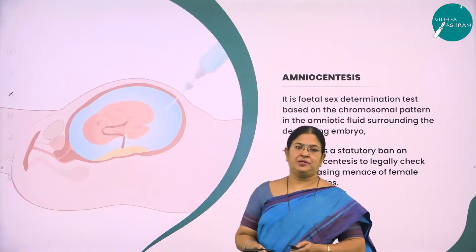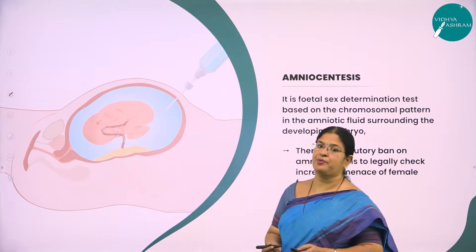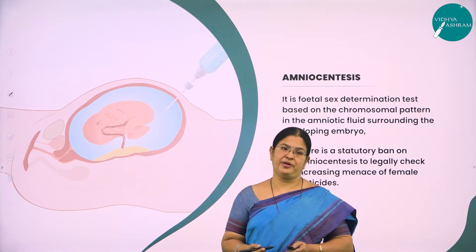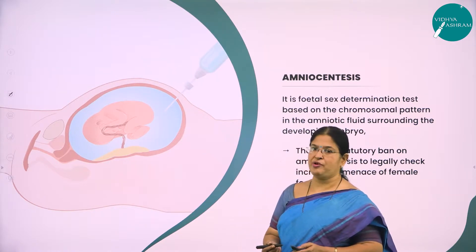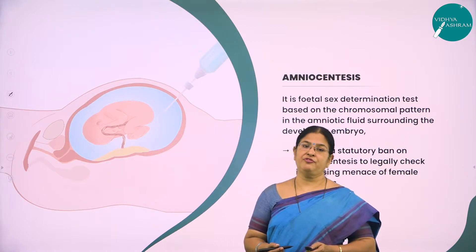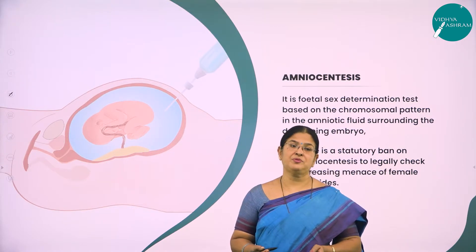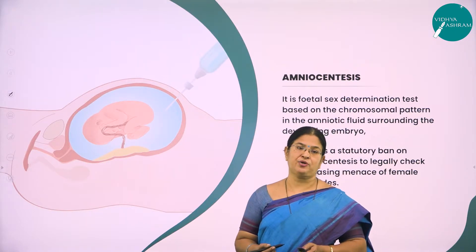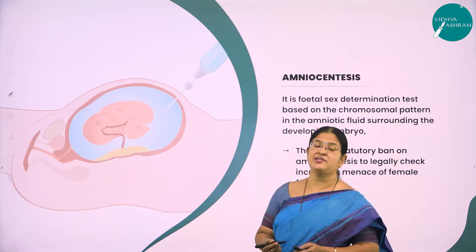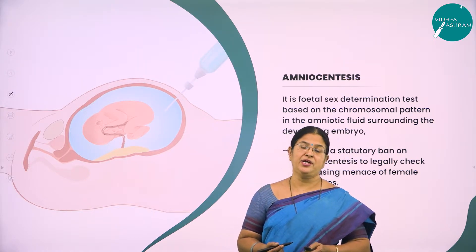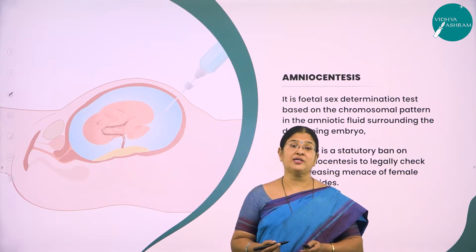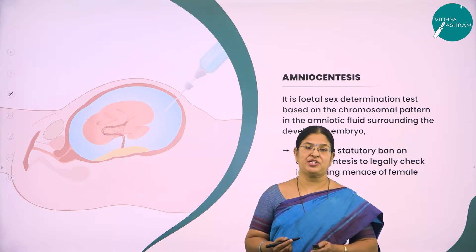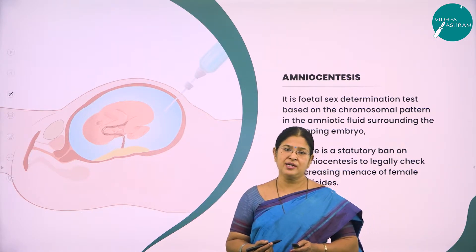Hope you all remember what we studied in Session 1 of this very important chapter called Reproductive Health. We studied the definition of reproductive health according to WHO, followed by the problems of reproductive health, the various strategies implemented to achieve reproductive health, and the action plans that need to be implemented.